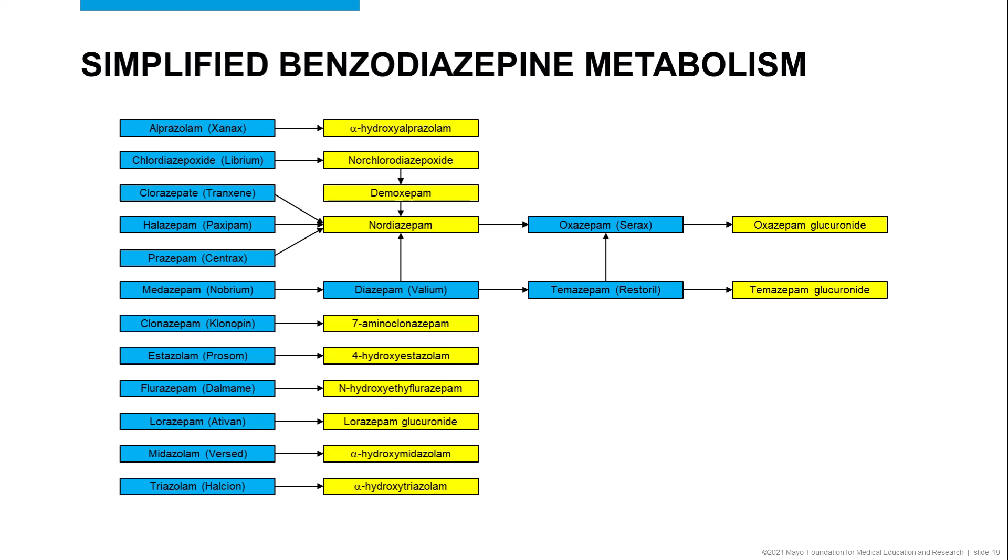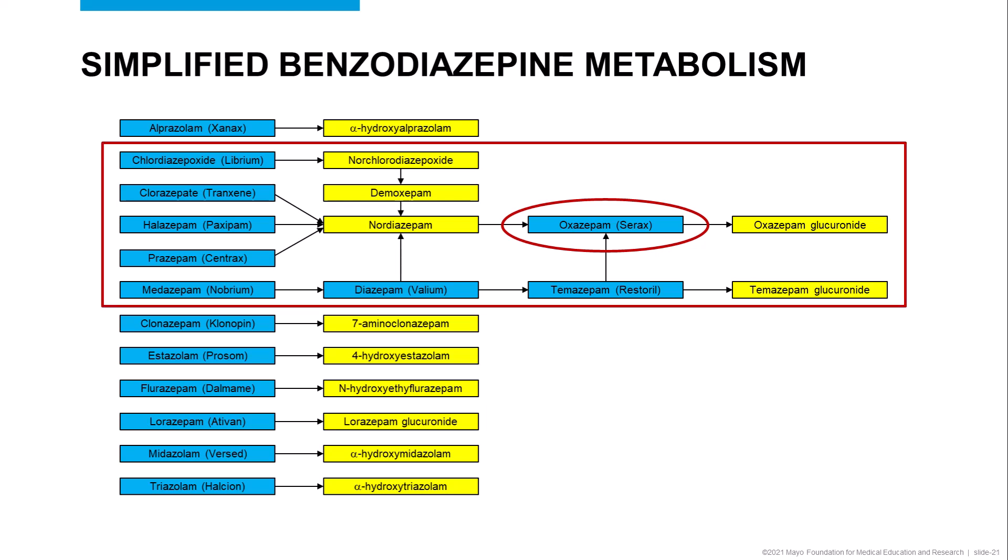This slide shows a simplified metabolic pathway for benzodiazepines. Each blue box contains a separate prescribable benzodiazepine, and the arrows indicate the metabolites formed when the drug is broken down in the body. As stated earlier, the antibody in most commercial benzodiazepine immunoassays is targeted against oxazepam, so these assays tend to be good at detecting benzodiazepines in that common pathway, outlined by the red box. However, our patient was prescribed lorazepam, which is metabolized to lorazepam-glucuronide and eliminated in the urine, and the cross-reactivity of the benzodiazepine immunoassay is relatively poor to lorazepam-glucuronide, making a false negative result more likely even when it is present.